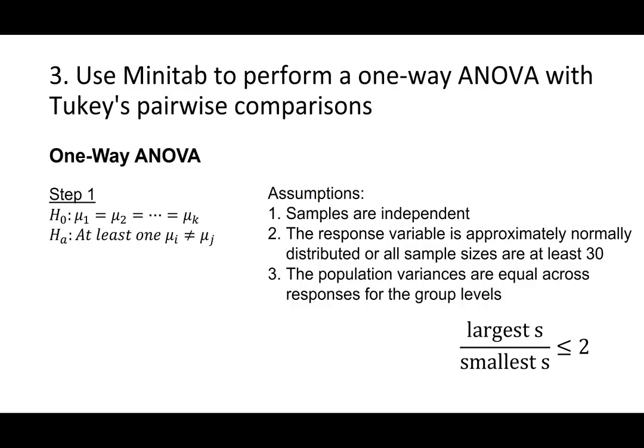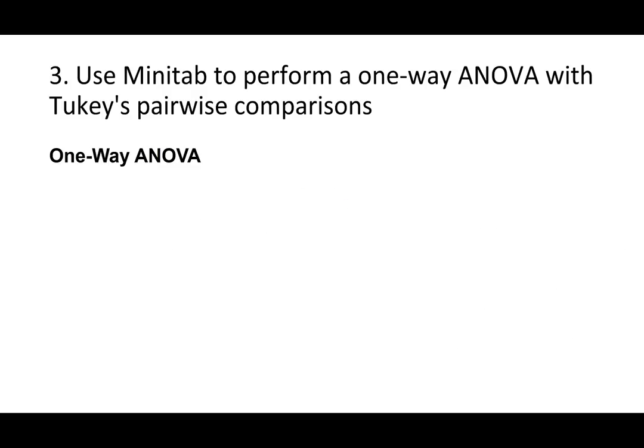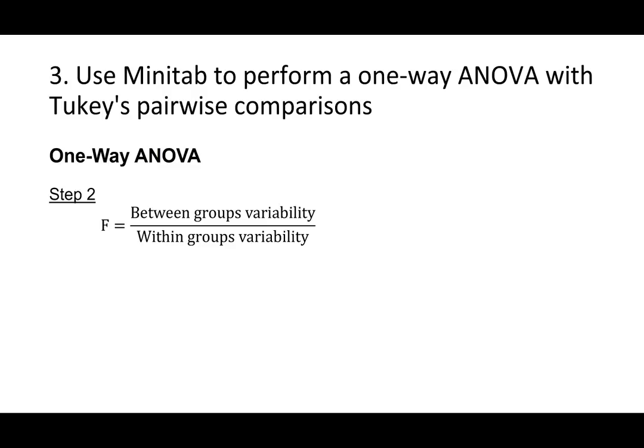Those alternatives tend to have lower statistical power, so when assumptions are met, a one-way ANOVA is preferred. Step 2 of the five-step hypothesis testing procedure is to compute the test statistic. For a one-way ANOVA, we'll be computing an F-test statistic because the sampling distribution is approximated by the F distribution. The hand calculations are not difficult, but they require many steps; in this class you'll be working primarily with Minitab Express. Conceptually, the F-test statistic is a ratio of the between-groups variability to the within-groups variability.